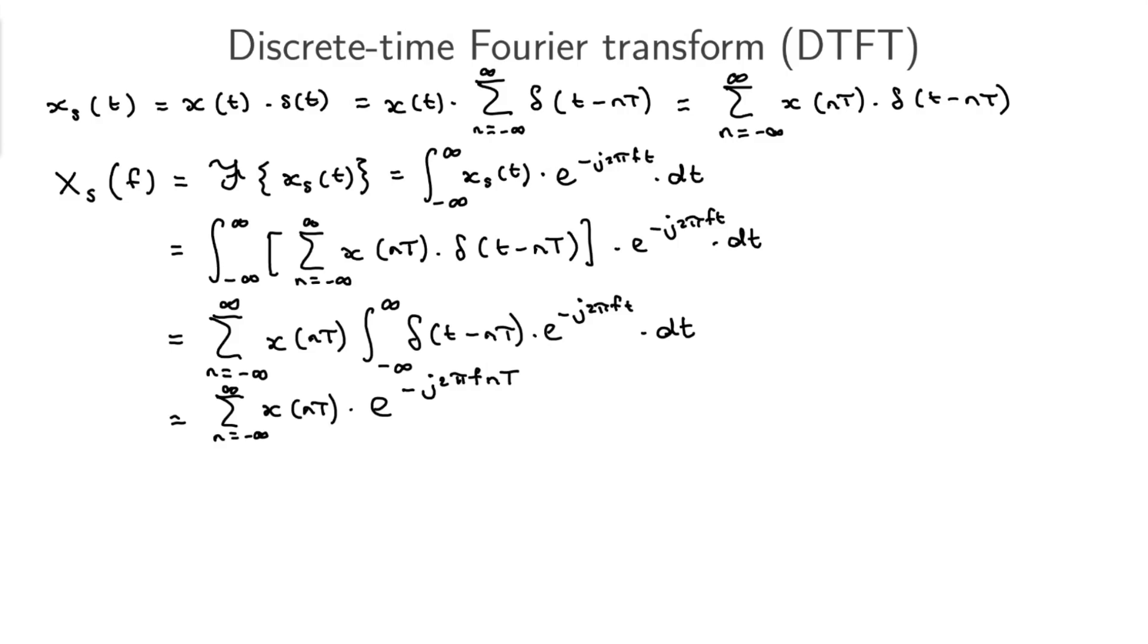We can still simplify this a little bit. The way we're going to simplify it is we're going to define a new variable here, and we will call that f_omega. And f_omega is this pretty cool thing. I'm going to define it. So we define it as fT. This is pretty weird, but it will become clear in a second why we're doing this. And that's also just equal to f over f_s.